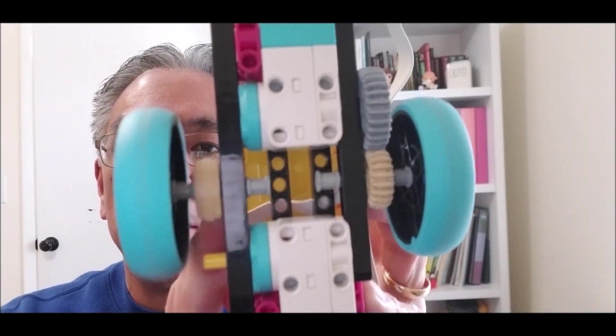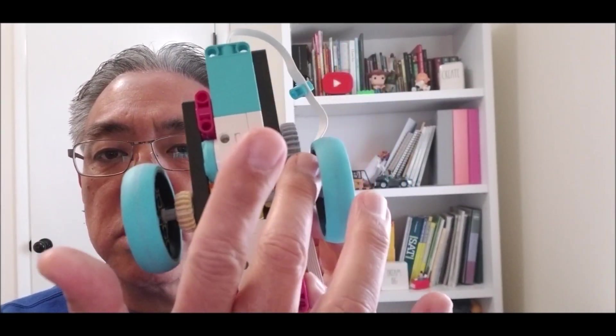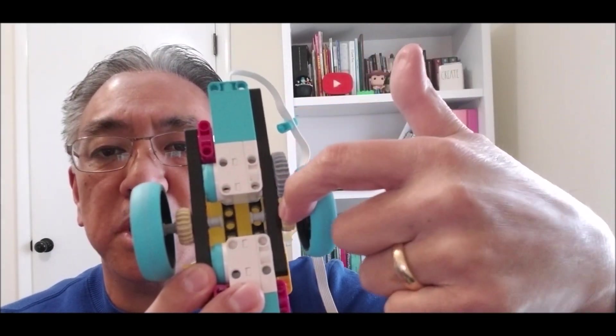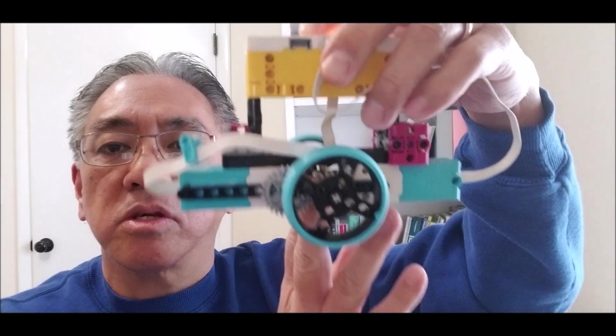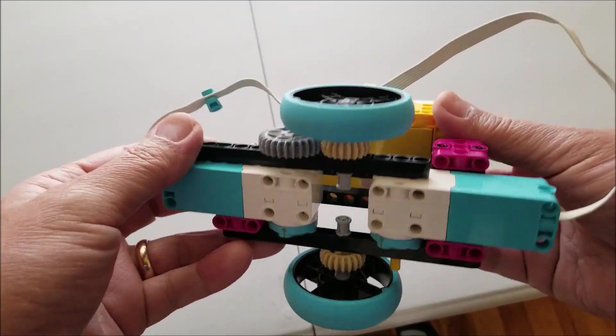So for Spike Prime, I actually left this gear off and I have this gear and this gear here. So this is the gear coming out of the motor right here and it's spinning this one right here. So let's go ahead and take a look at it. Okay, let's go ahead and take a look at this guy.